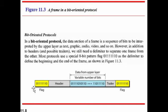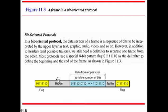The bit-oriented protocol uses specific bits in the flag to indicate the start and end of a frame. The flag consists of a special 8-bit pattern. This is the function of the data link layer relating to framing using bit-oriented protocols.